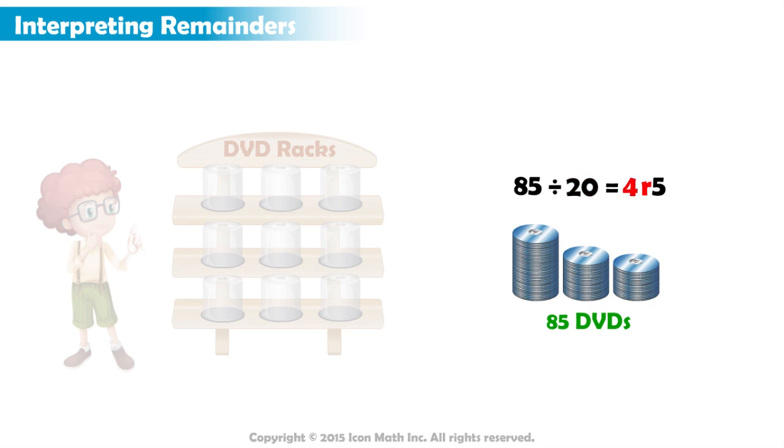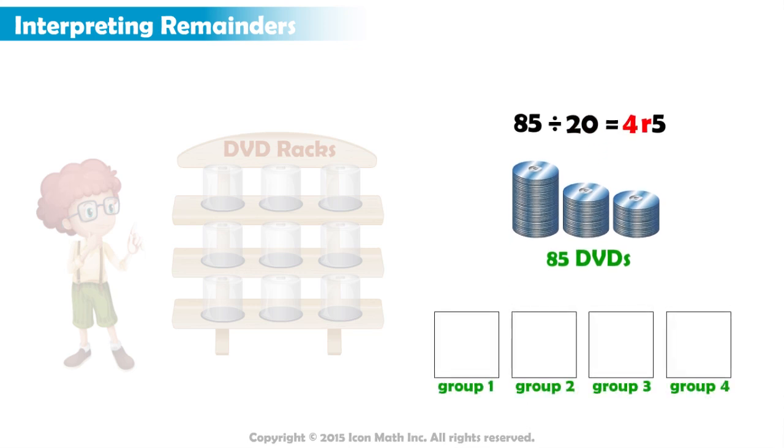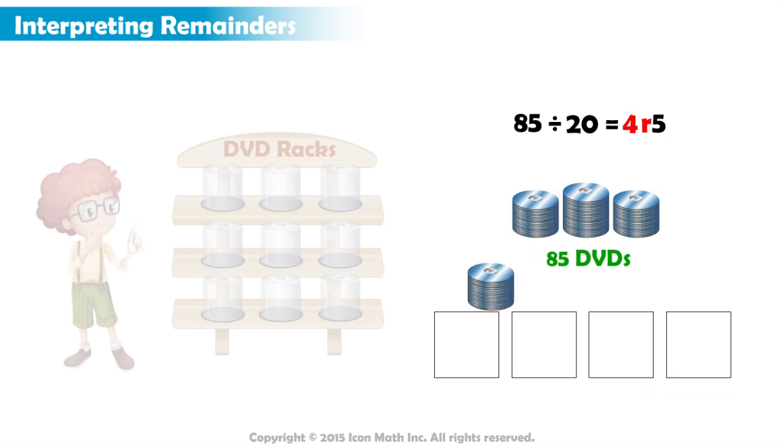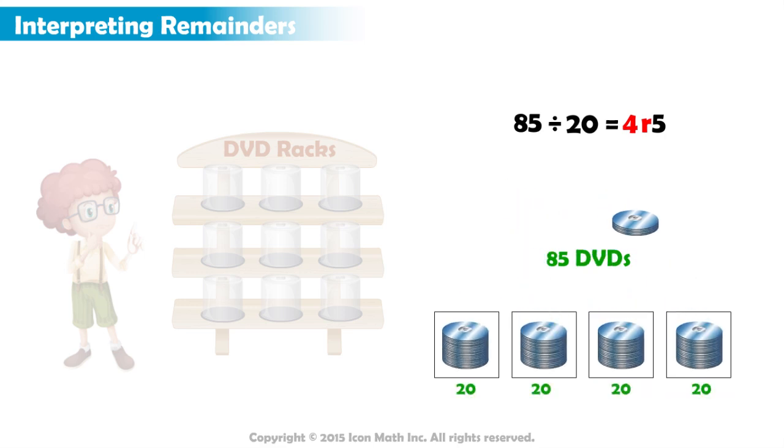The quotient is 4, so there are 4 equal groups each has 20 DVDs, and the remainder is 5. So there are 5 DVDs left over after Alex split his 85 DVDs into groups of 20.